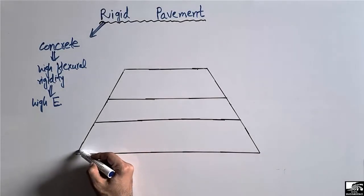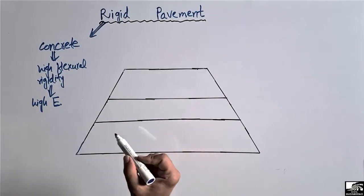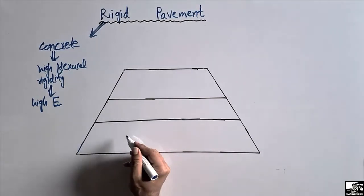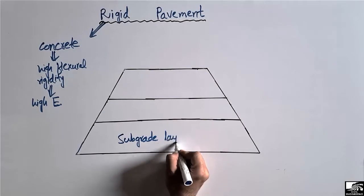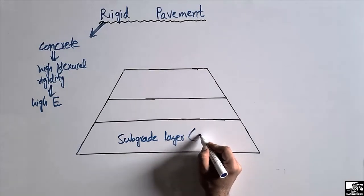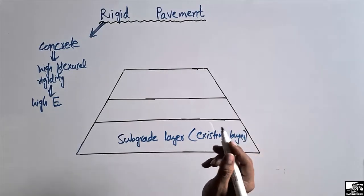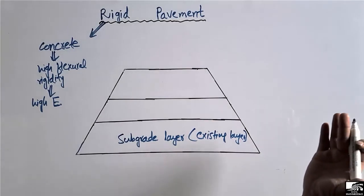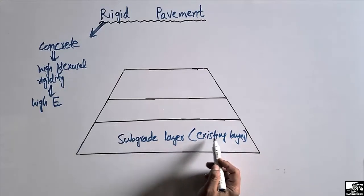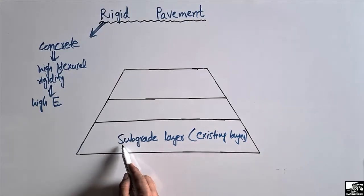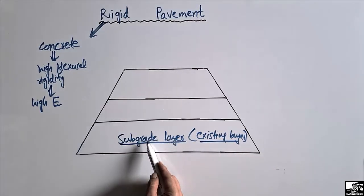Such type of pavement is called a rigid pavement. There are different layers used in the construction of the rigid pavement. The bottom layer is known as the subgrade layer, and this layer is usually an existing soil layer on site. We don't need to bring soil from outside; this layer is already on site and we just compact it to a certain degree.